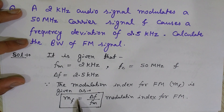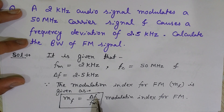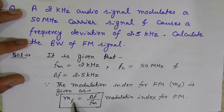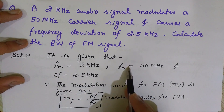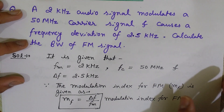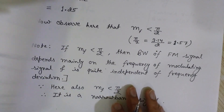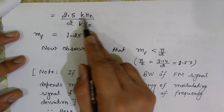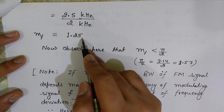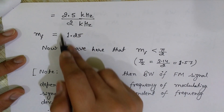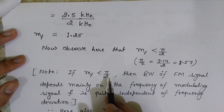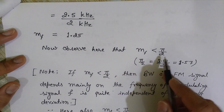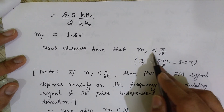First, you should find the modulation index of the FM. The modulation index for FM is given as delta F divided by FM. I have delta F and I also have FM. So the modulation index is: delta F over FM = 2.5 kilohertz divided by 2 kilohertz, which equals 1.25. This is the modulation index for this FM signal.